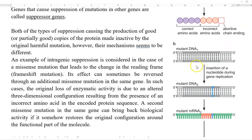Both intergenic and intragenic suppression mutations help in the production of good or partially good copies of the protein, which was initially made inactive by the first or original harmful mutation. However, their mechanisms are different.